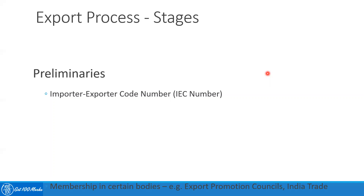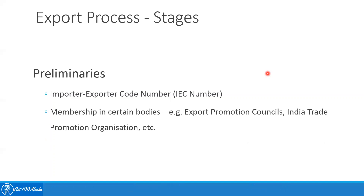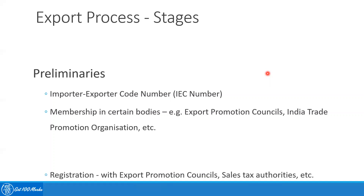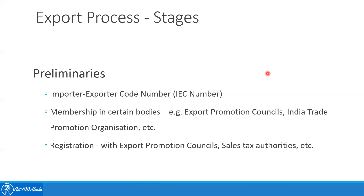The IEC number allows you to function as an exporter. You also need to have membership in certain bodies like the Export Promotion Councils and the India Trade Promotion Organizations. These bodies help in promoting exports and define the policies and regulations around exports. You also need to register yourself with the tax authorities and the promotion councils to handle taxation and to avail the various benefits these export promotion councils offer. Those are the preliminaries phase.